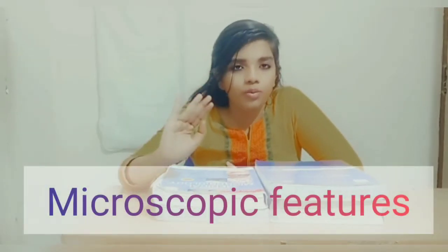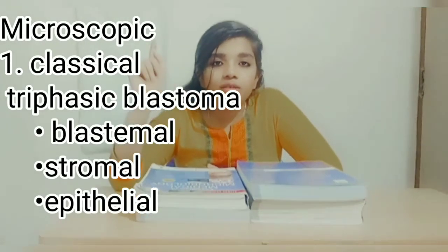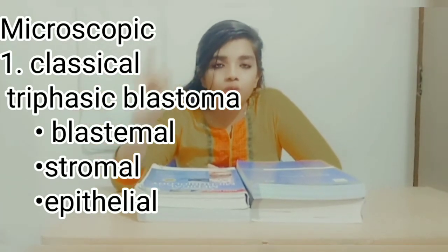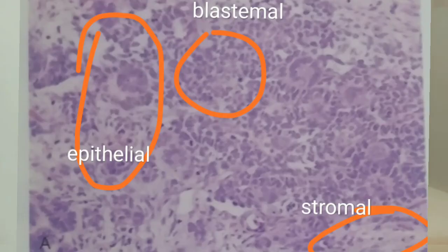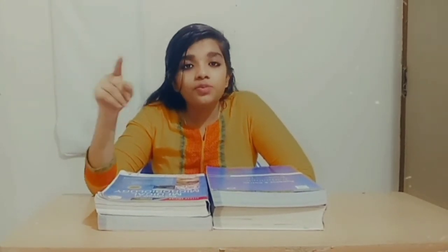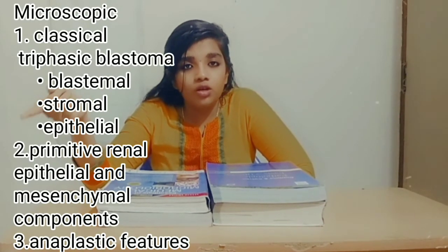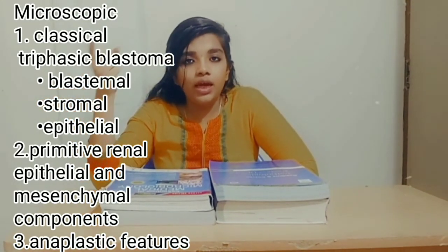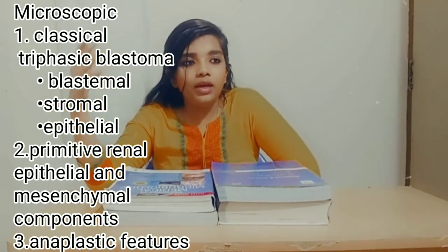Microscopically, Wilms Tumor has a classical appearance of triphasic blastoma — it has a blastemal cell component, a stromal cell component, and an epithelial cell component. The blastemal cells are blue-colored and resemble lymphocytes but are not lymphocytes. The epithelial component contains underdeveloped, abortive glomerular tubules. The stromal component shows fibromyxoid stroma with primitive renal epithelial and mesenchymal components. Anaplastic features like hyperchromatic nuclei, giant cells, and frequent mitoses are also seen.